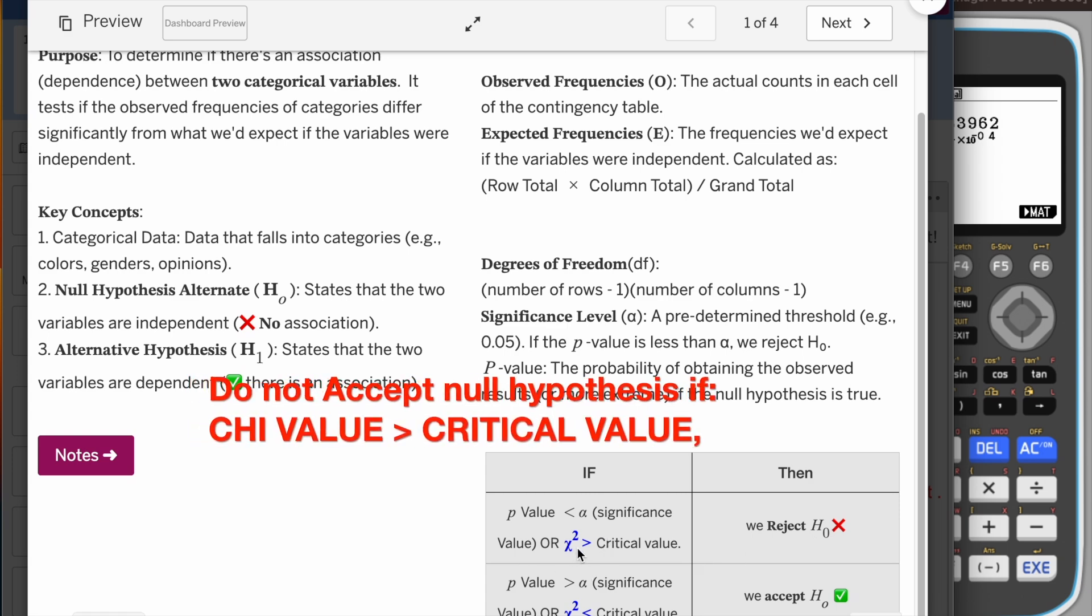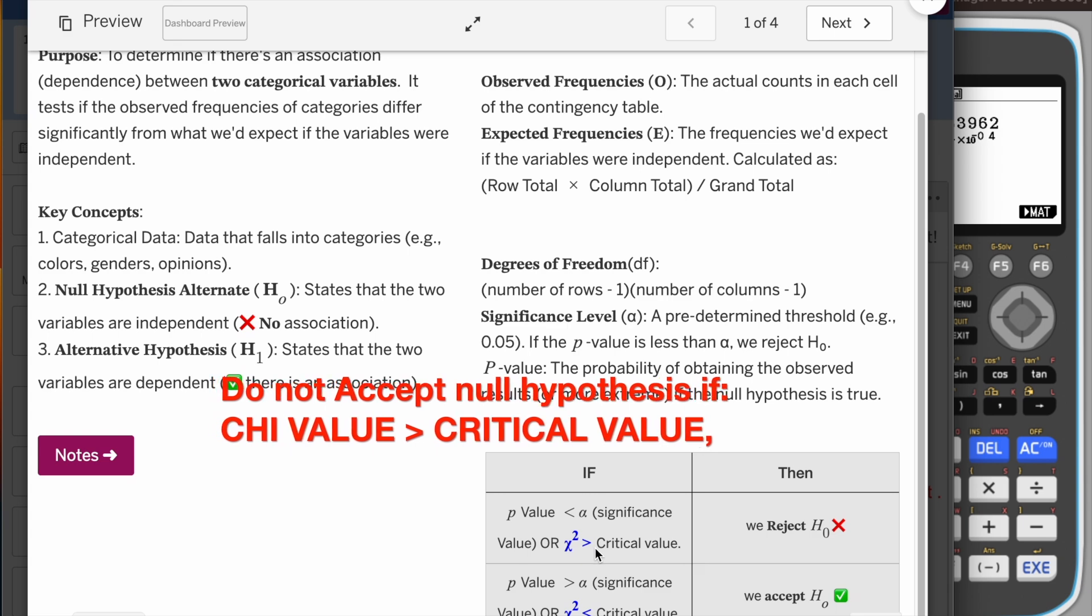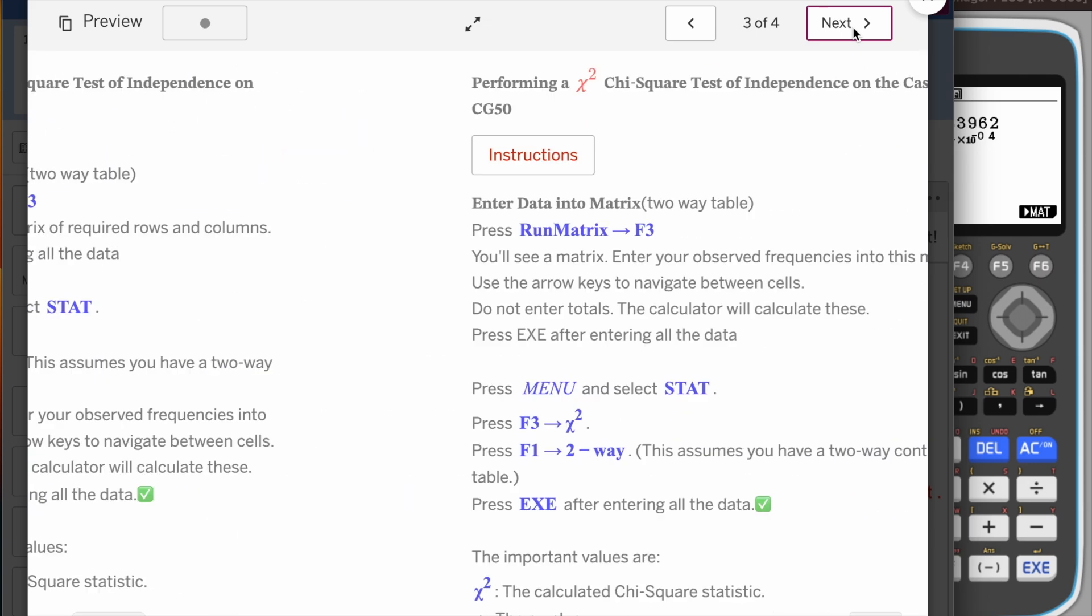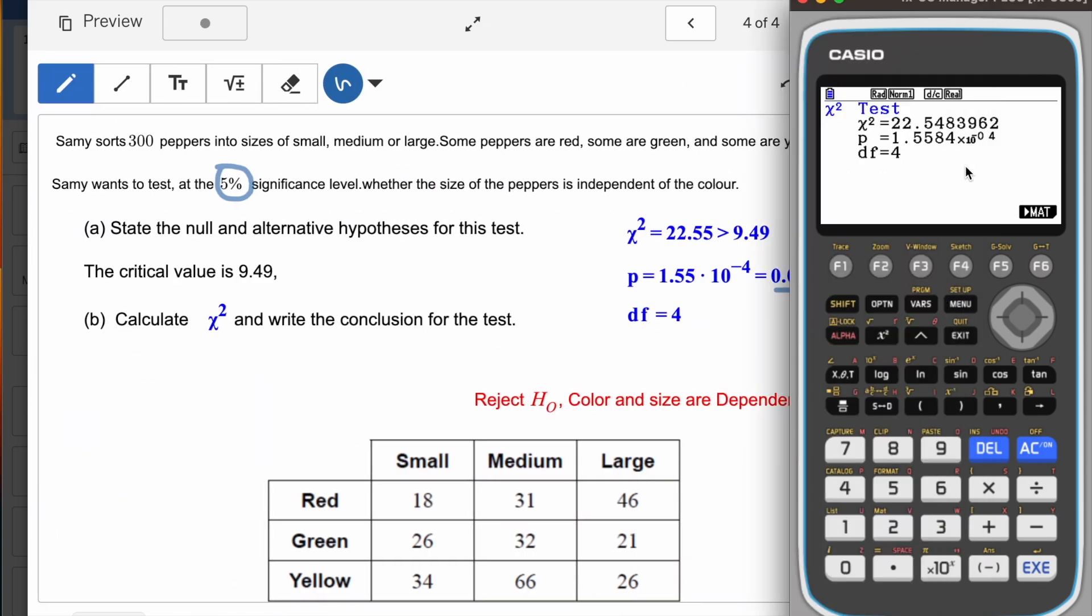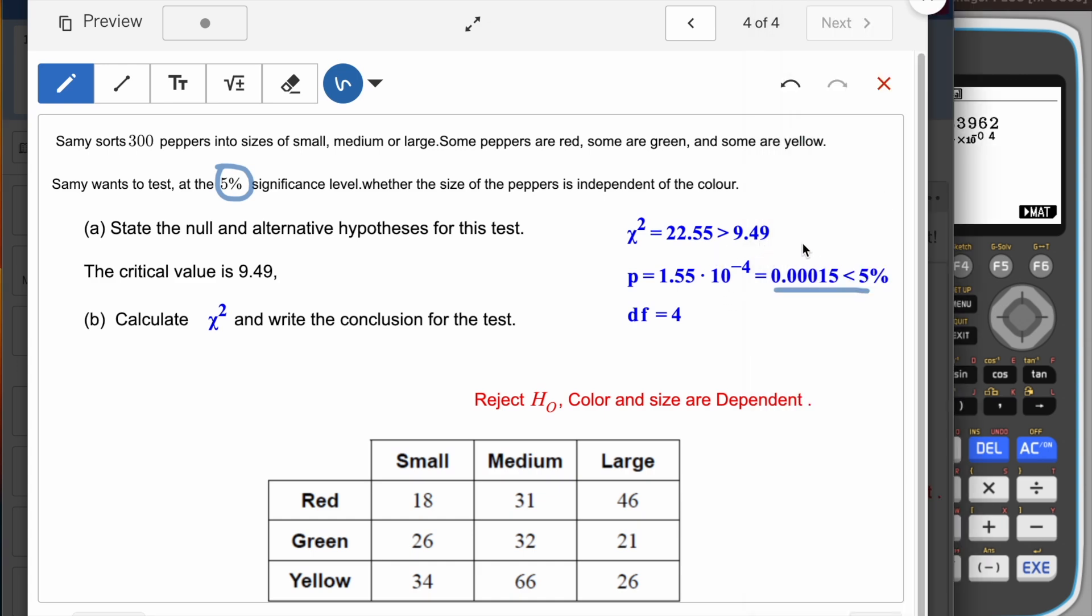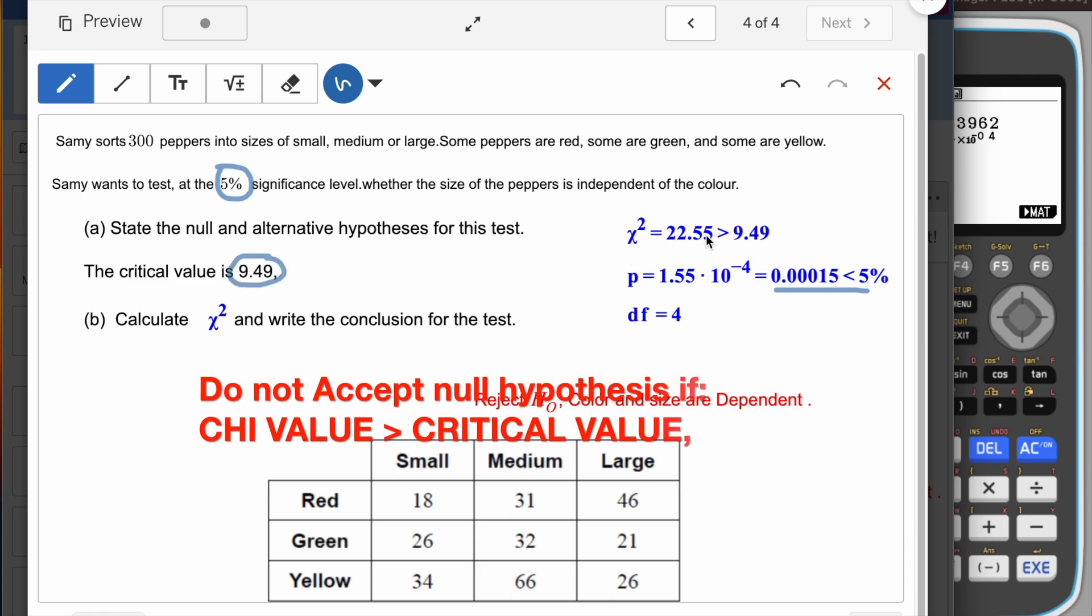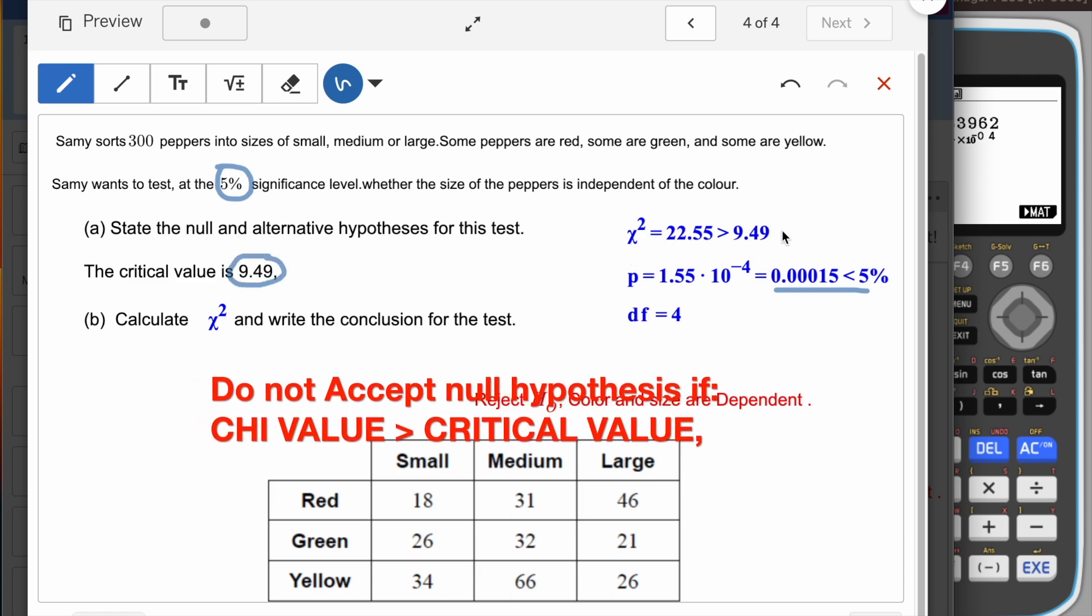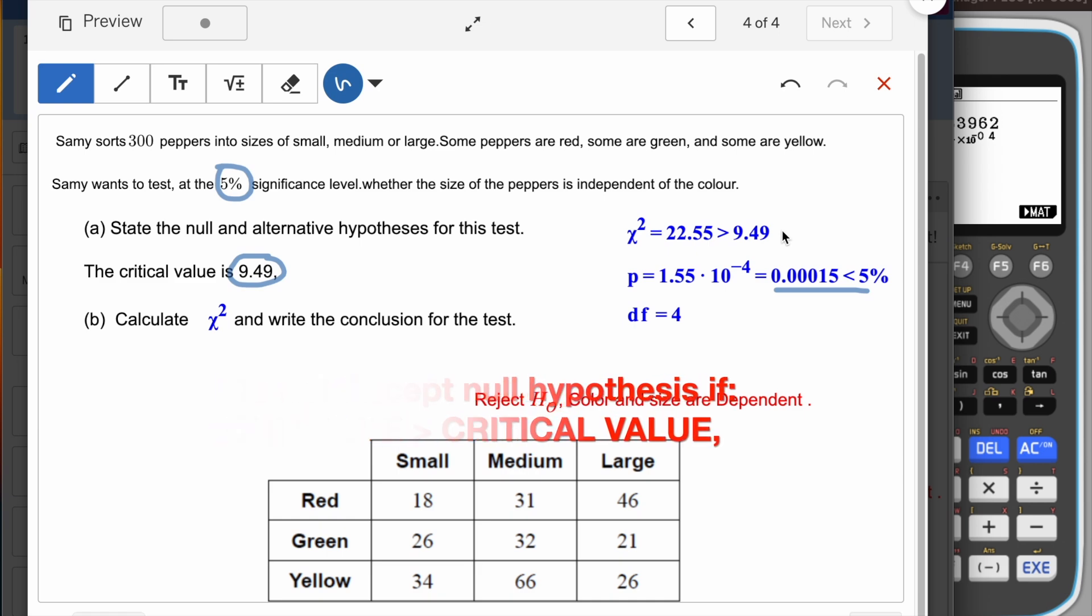The other way was if your chi-squared value is greater than the critical value. Let's see. The chi-squared value is 22.548 and when you compare with 9.49, you'll find out this is bigger than 9.49.